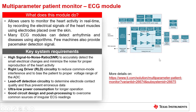Let's start with the ECG module. This module allows users to monitor the heart activity in real time by recording the electrical signals of the heart muscles using electrodes placed over the skin. The key system requirements for the ECG module are: high signal-to-noise ratio, or SNR, to accurately detect the small electrical changes and minimize noise for proper reproduction of the heart activity; and RLD, or right leg driver circuitry, to reduce common mode interference and to bias the patient to the proper voltage range of the ADC.